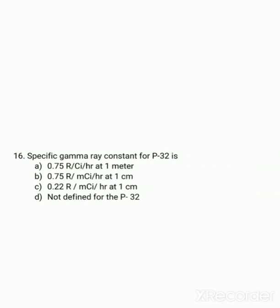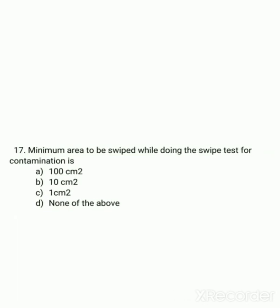The specific gamma ray constant for P-32: the specific gamma ray constant can be calculated only for gamma emitters, and P-32 is not a gamma emitter — it is a beta emitter. So the specific gamma ray constant for P-32 is not defined. The exact answer is D — not defined for P-32.